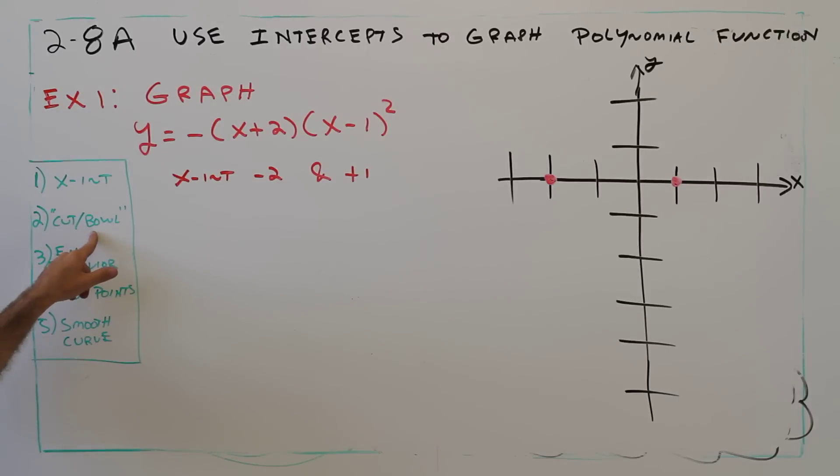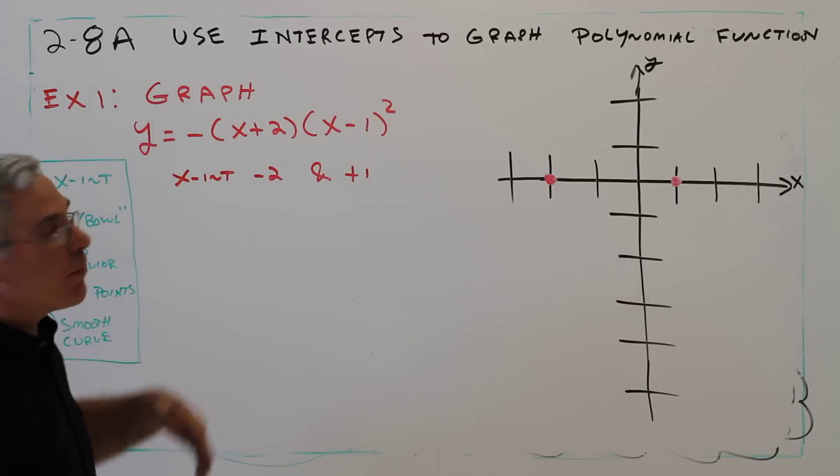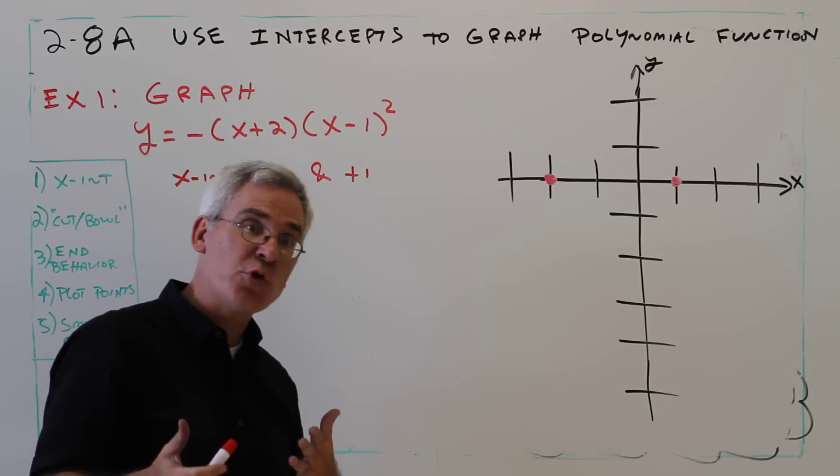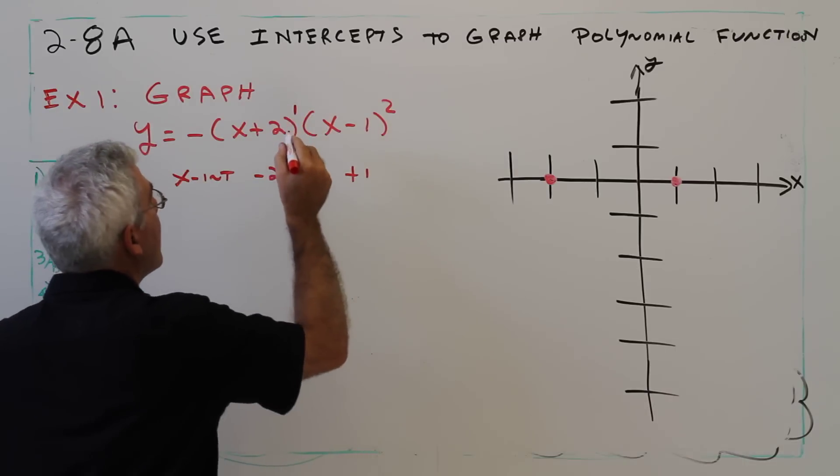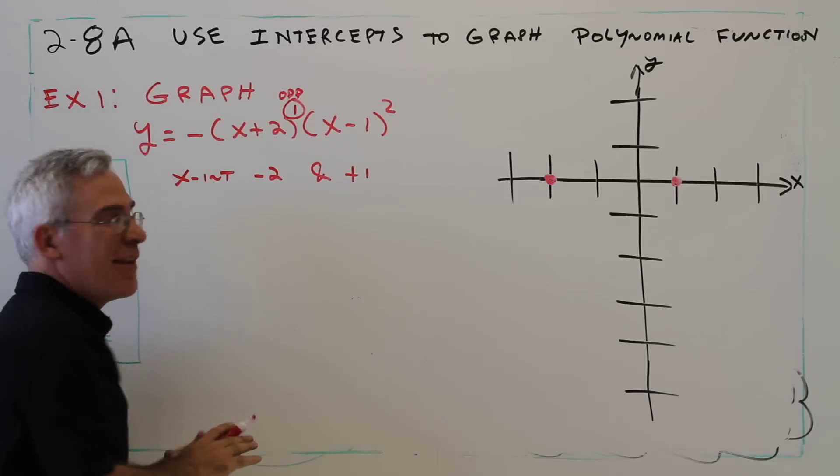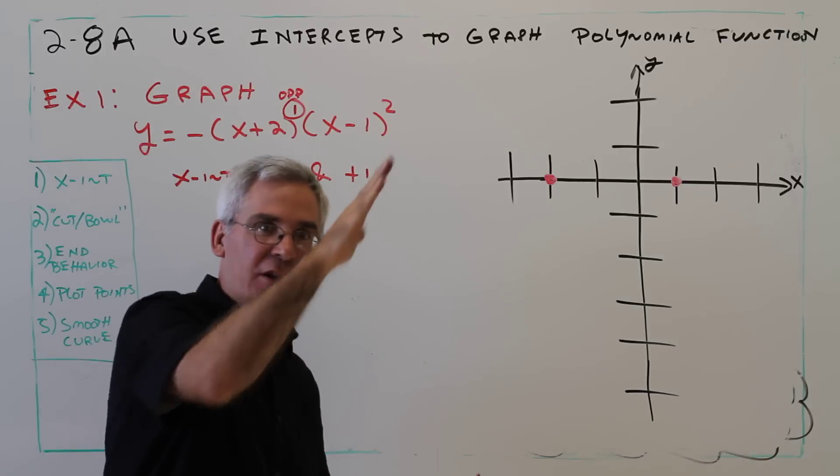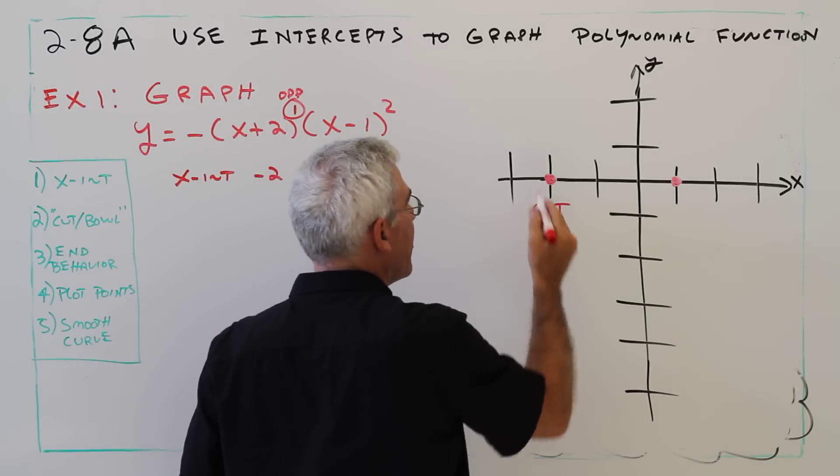The next thing is to determine if each intercept represents a cut-through or a bowl, and that's determined by the exponent associated with it, if it's even or odd. Since this exponent is odd, it's kind of like y equals x and it's going to cut through. So this one right here is going to be a cut-through.